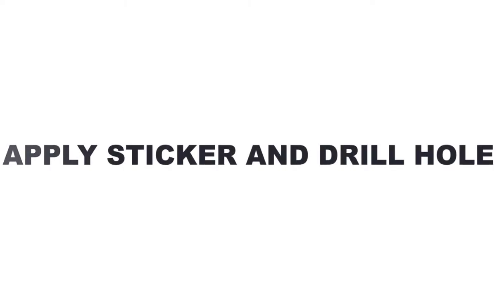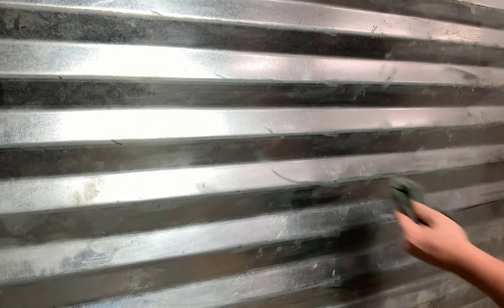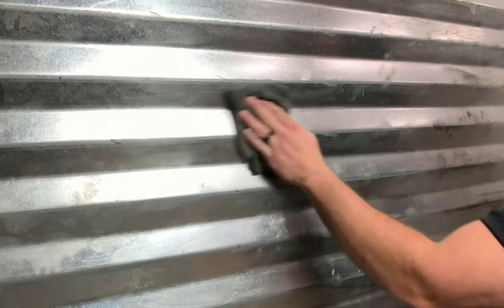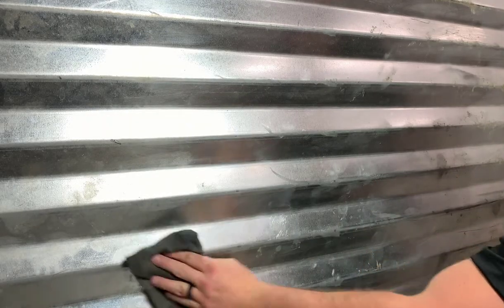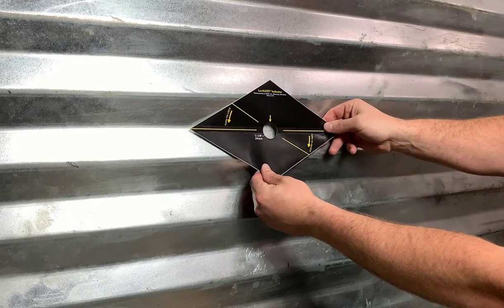The first thing to do is apply the sticker and drill the hole. First, wipe the bin wall clean with a damp cloth. Next, apply the black diamond-shaped sticker to the bin wall, positioning it horizontally.